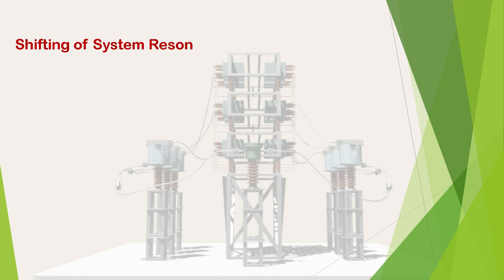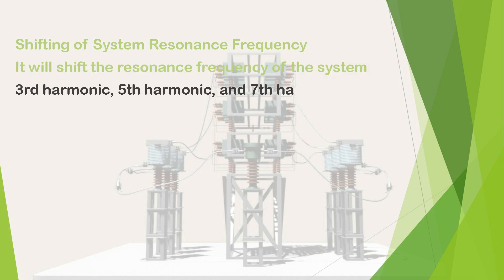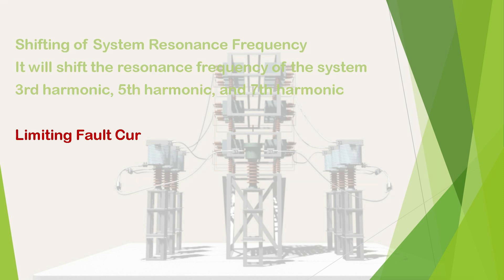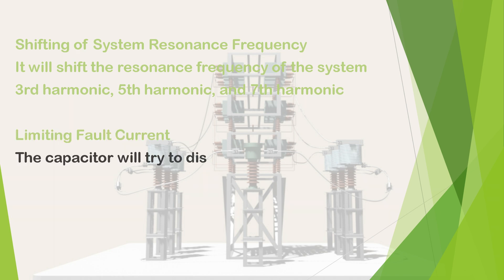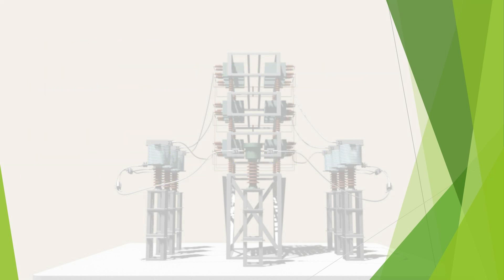This is how we use inductors with the capacitor bank to limit the inrush current during switching on. Another benefit of adding this inductor to the circuit is that it shifts the resonance frequency of the system, meaning the third, fifth, and seventh harmonics of the system frequency will be shifted, so the problems due to harmonics will be reduced. Additionally, whenever there is a fault in the power system, the capacitor will try to discharge through the fault path — and the inductor connected in series will limit this fault current and save the capacitor bank.